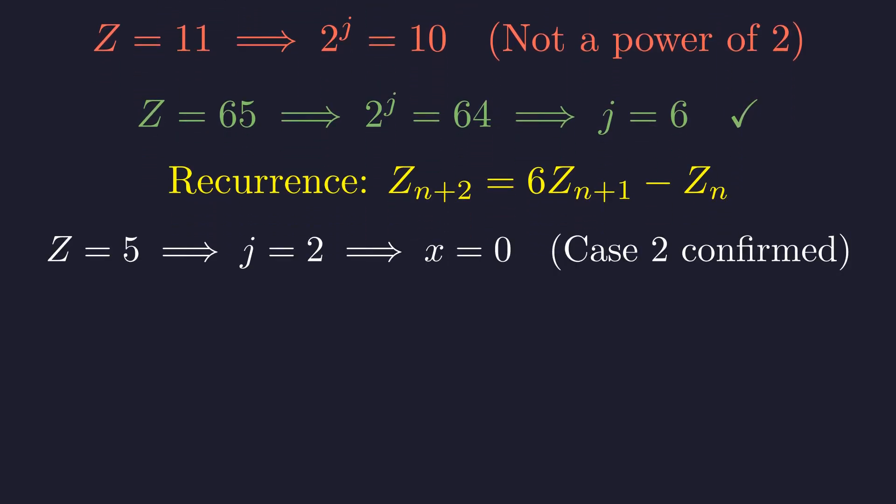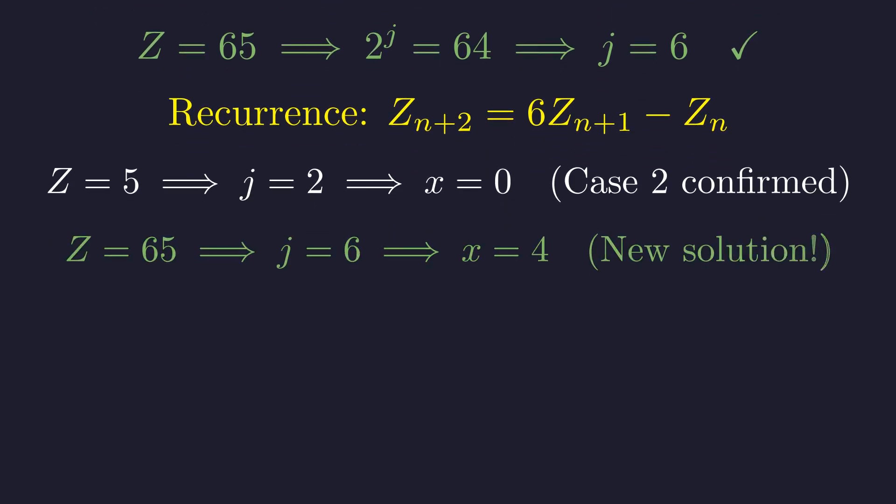The case z equals 5 gives us x equals 0, confirming our case 2 result. The case z equals 65 gives us x equals 4. This is our new solution for case 3.